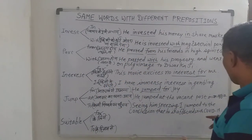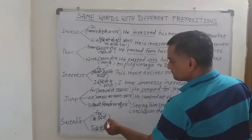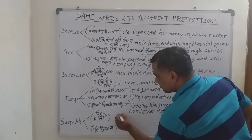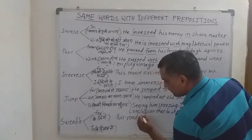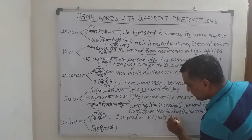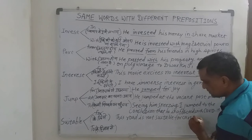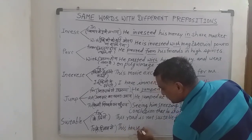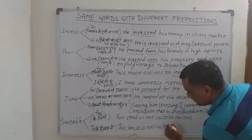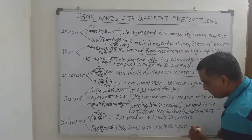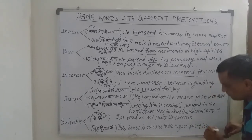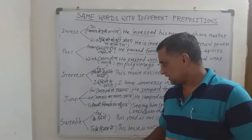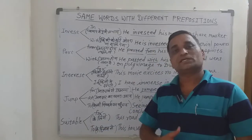Next is 'suitable for' and 'suitable to.' 'Suitable for' is used for things or activities — for example: 'This road is not suitable for a car.' 'Suitable to' refers to fitness in relation to a position or status — for example: 'This house is not suitable to your position.' So the preposition changes the context of suitability.